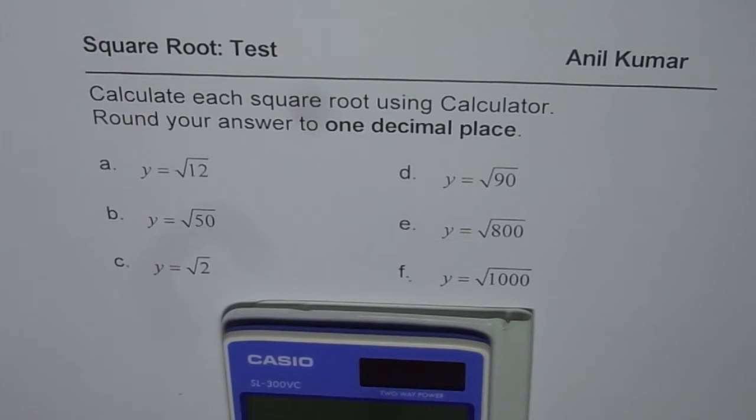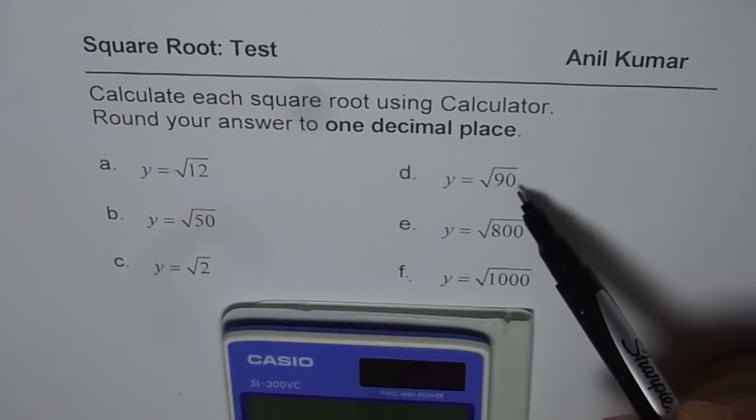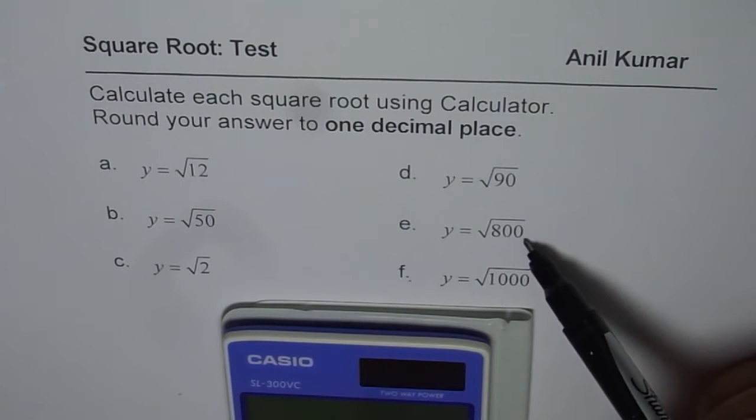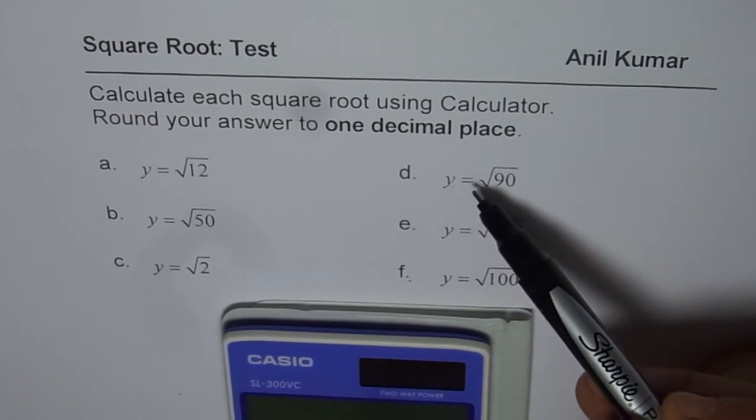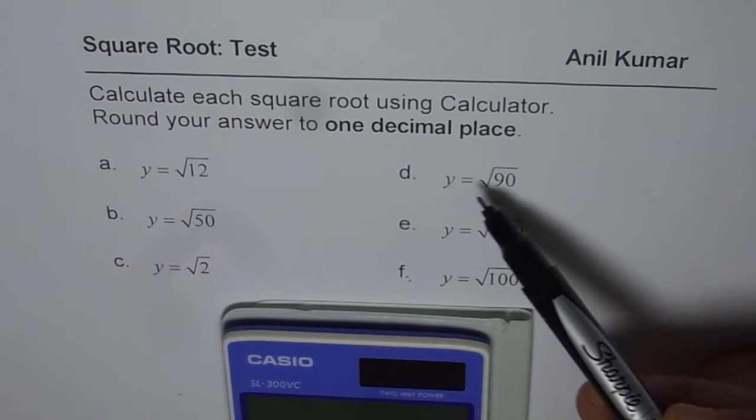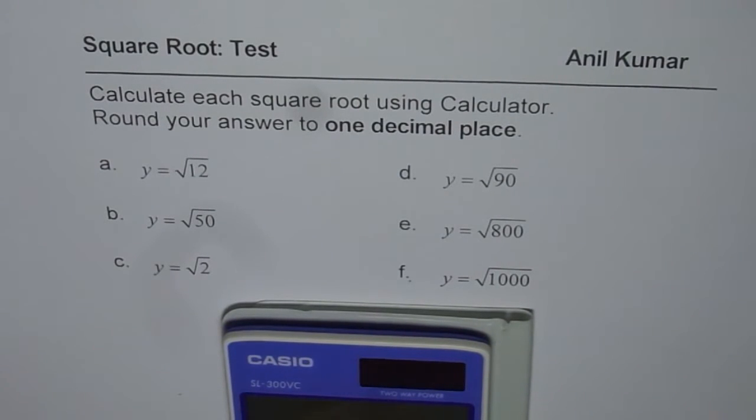We have six square roots to be found. The first one is square root of 12, then we have square root of 50, square root of 2, square root of 90, square root of 800 and square root of 1,000. Don't get confused by y equals. It is the number which you need to find. So I am also introducing you to some variables which you are going to soon learn about.